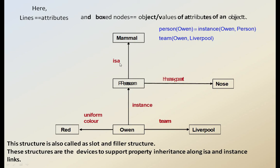Here we have clearly specified the generalization 'is-a' relationship, the instance relationship, and 'has-a-part' as association. Red is the attribute value for uniform color, and Liverpool is also the attribute value for team name. Like this, the various kinds of values can be represented in the property inheritance.